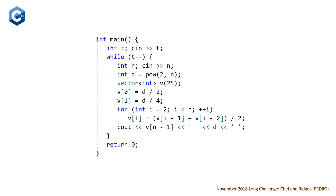Let's take a look at our C++ solution. At the top we read in t, the number of test cases, then a while loop for t. We declare integer n, read it in, and calculate the denominator using the power function. We set up a vector of integers — since n is at most 25, we can hard-code that size. We initialize the first two values to denominator/2 and denominator/4, then loop through up to n, calculating each value as the average of the previous two. Once the loop finishes, we output the value at index n-1 as our numerator, followed by d the denominator, all on the same line.